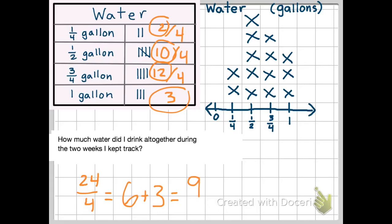And these are nine what? Nine gallons. So the total amount of water I drank altogether was nine gallons of water.